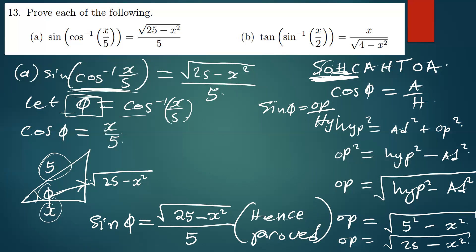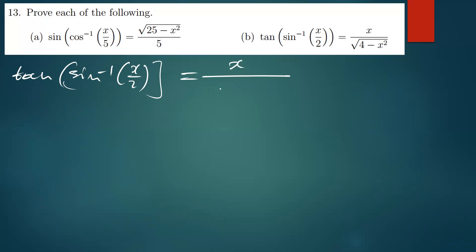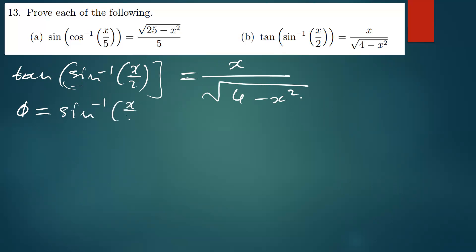So we do the next one. The next one is tan of sin inverse of x over 2. They're saying this should be equal to x over the square root of 4 minus x squared. So let's say our φ is equal to sin inverse of x over 2, meaning sin φ becomes x over 2.